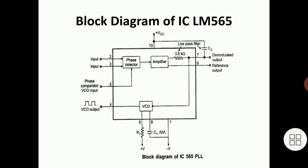In capture mode, an input signal is applied to the phase detector, and the VCO starts to change its output signal frequency, trying to become equal to the input signal frequency. In lock mode, the output signal frequency of the VCO becomes equal to the input signal frequency — this is called the lock mode.